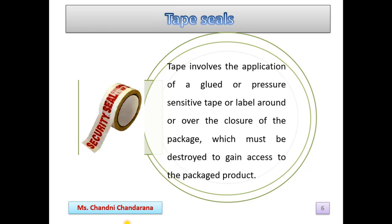Now we will see the tap cells or tab seals. This step involves the application of a pressure-sensitive tab or label around or over the closure of the package, which must be destroyed to gain access to the packaged product. It is very easy to understand.